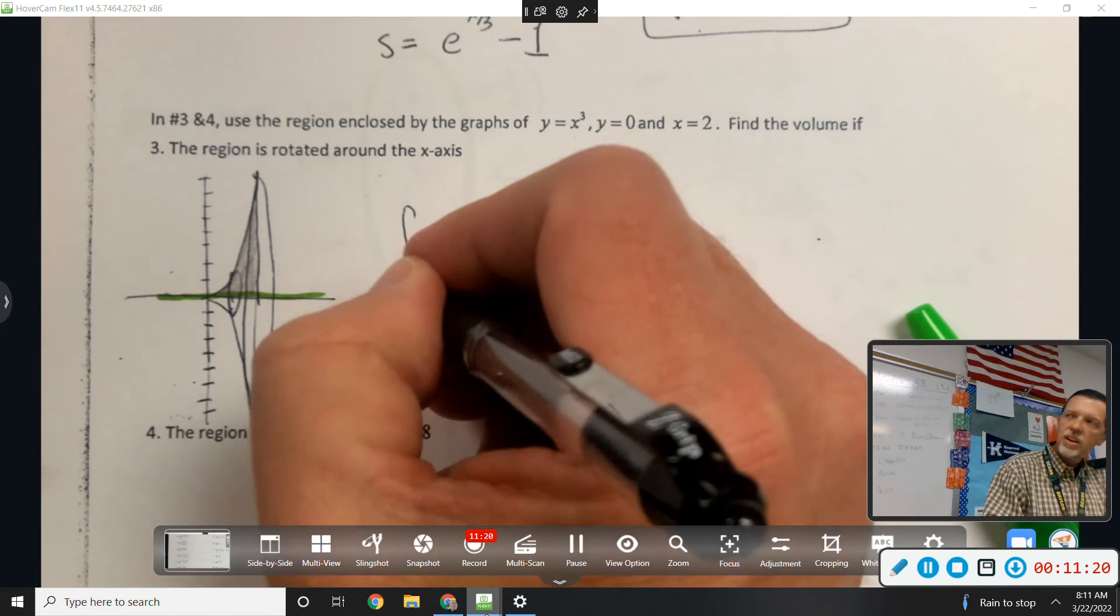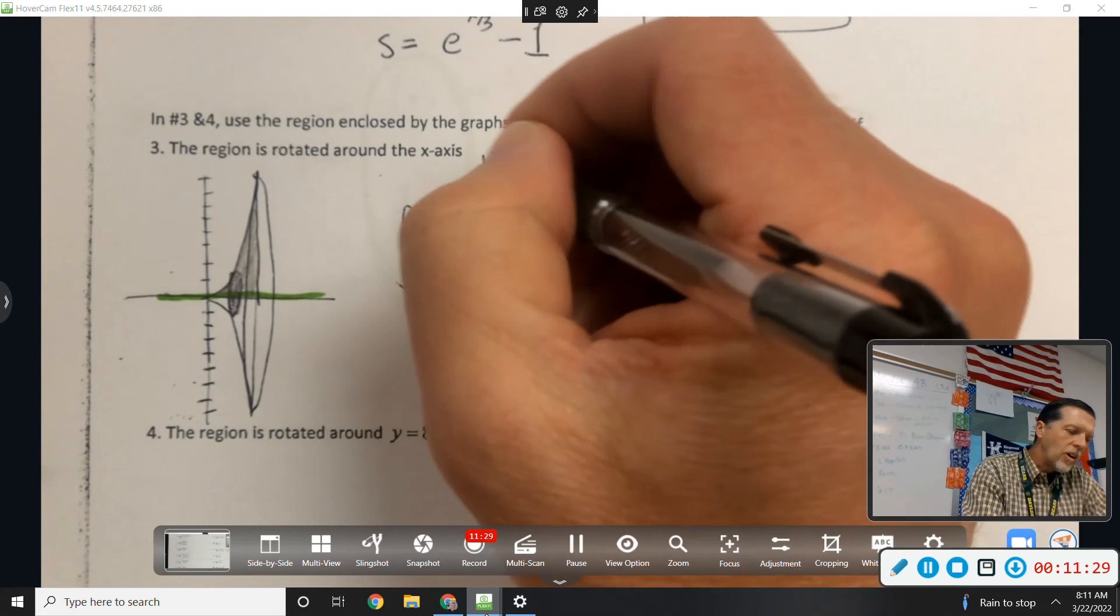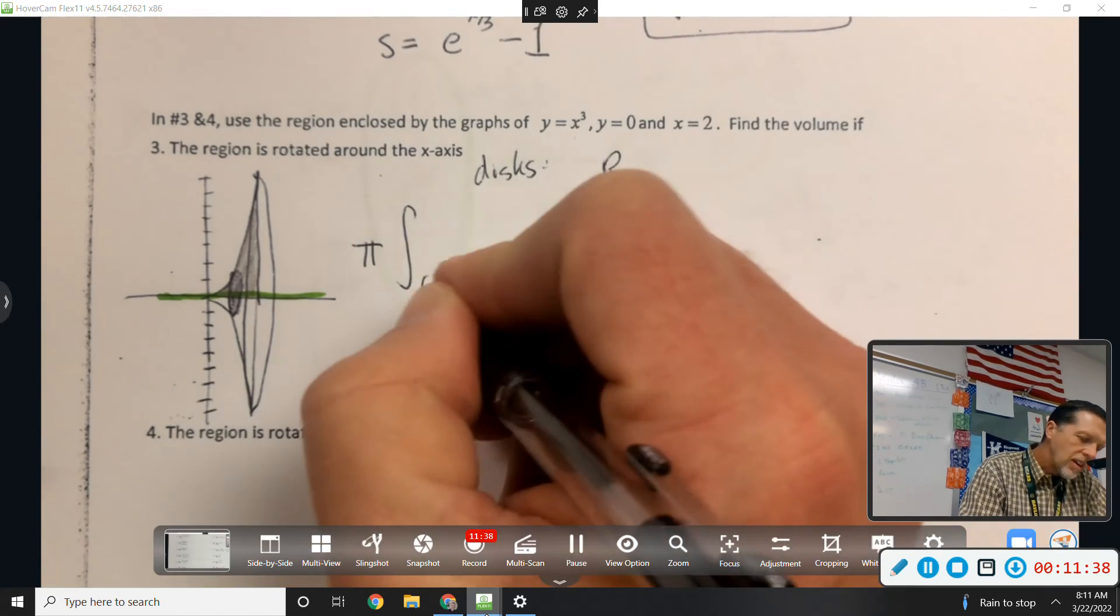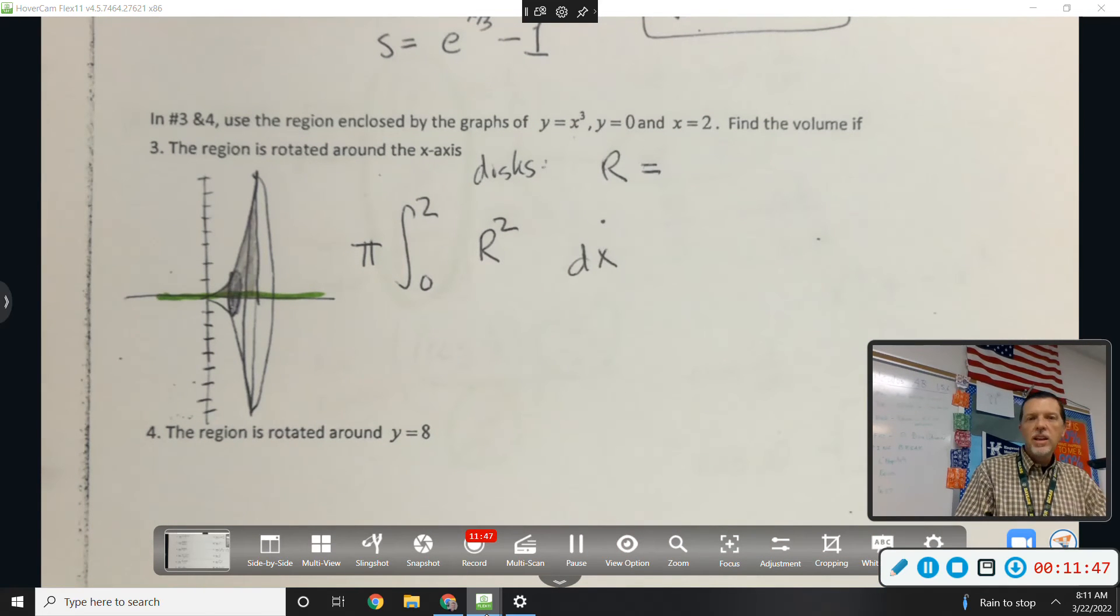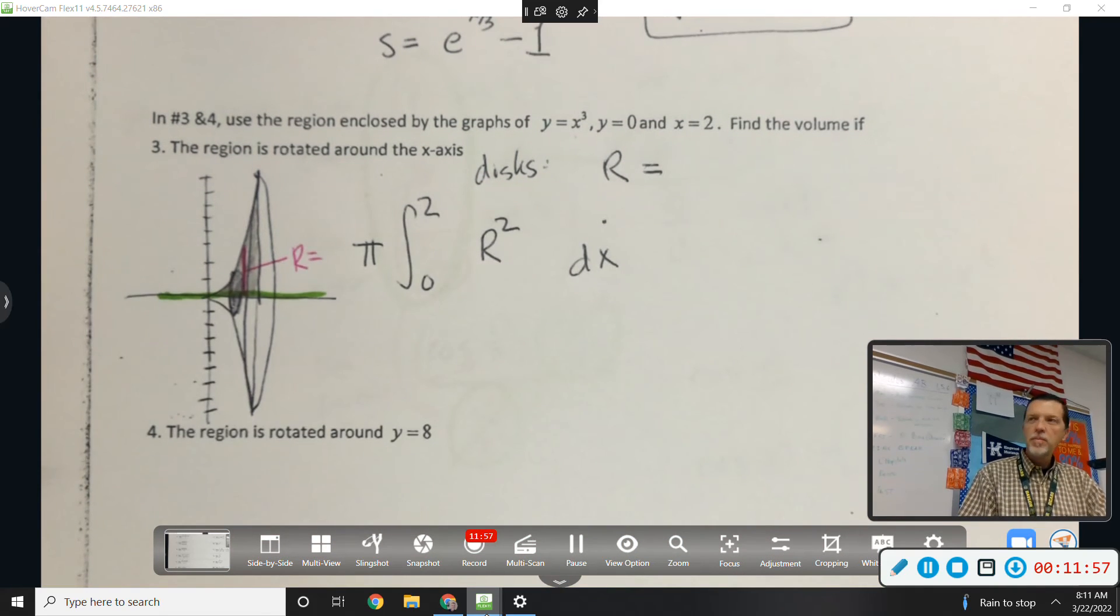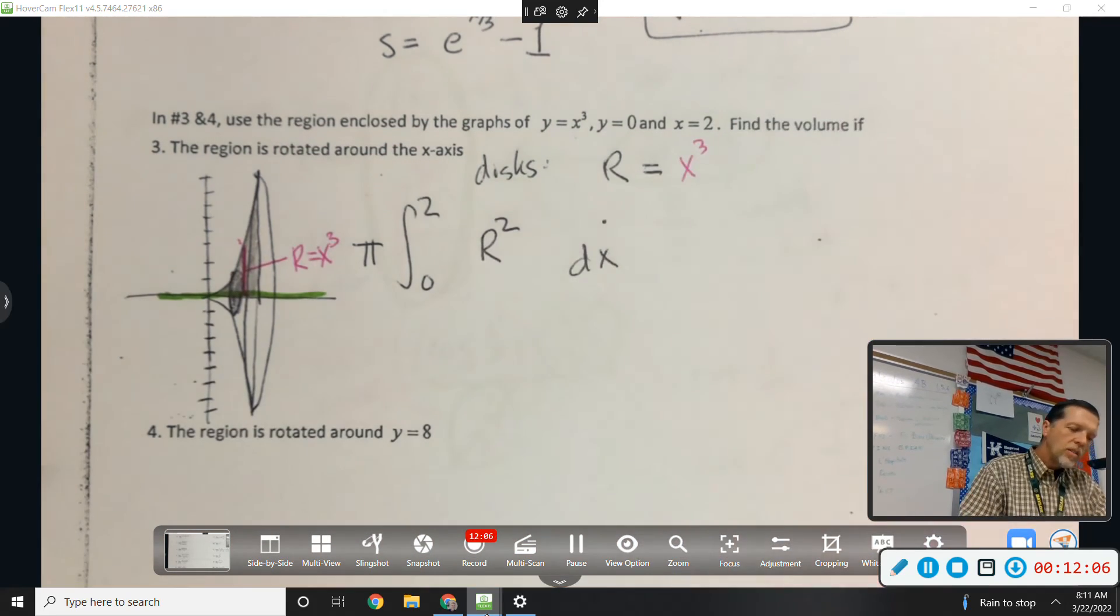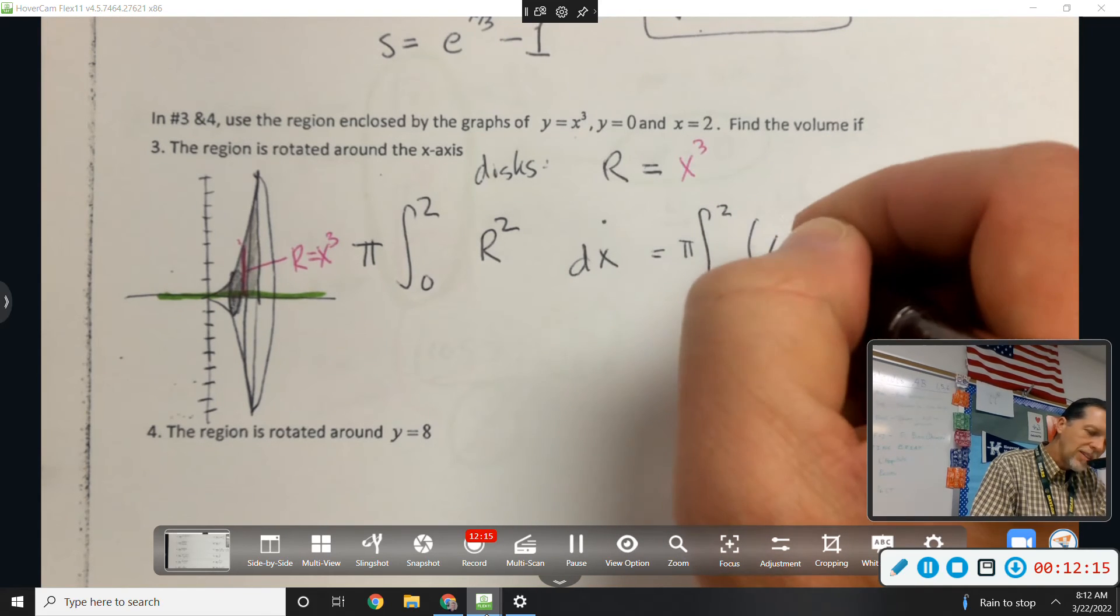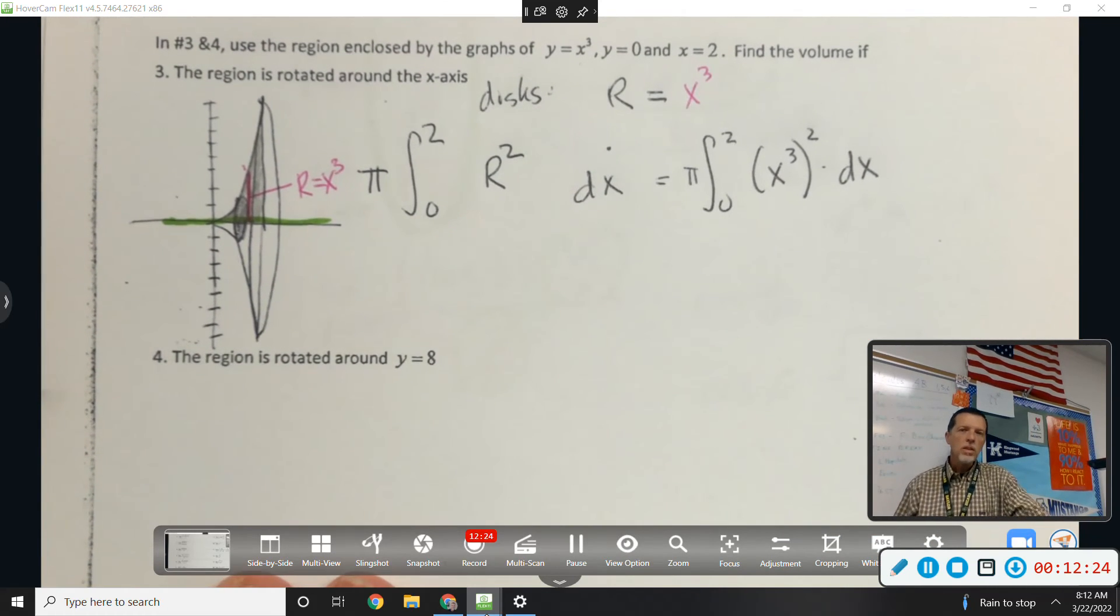Discs or washers. This may be hard to tell, but disc or washers for this problem? Discs. So all I need is a big R. They're stacked up dx from 0 to 2. Big R squared. So as soon as I find big R, I'm ready. So what's R equal to? X cubed. It's the distance from the x-axis to there, so that's y. That's x cubed. So now I've shown enough work. I can go straight to the calculator. Just so we can get through number 4, I'm going to leave that alone.